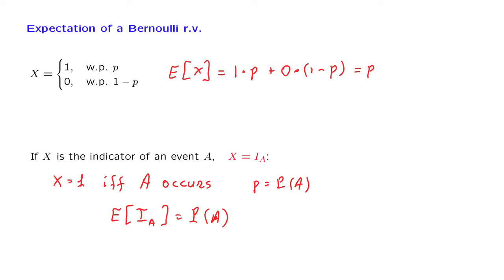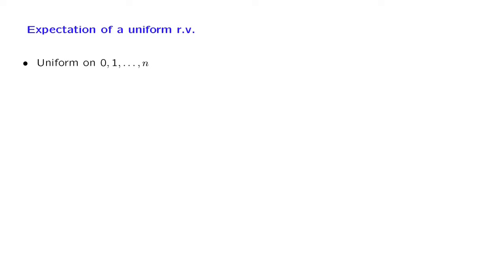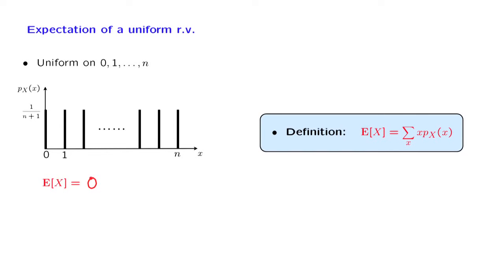Let us move now to the calculation of the expected value of a uniform random variable. Let us consider, to keep things simple, a random variable which is uniform on the set from 0 to n. It's uniform, so the probability of the values that it can take are all equal to each other. It can take one of n plus 1 possible values, and so the probability of each one of the values is 1 over n plus 1. We want to calculate the expected value of this random variable. We just recall the definition of the expectation. It's a sum where we add over all the possible values, and for each one of the values, we multiply by its corresponding probability.